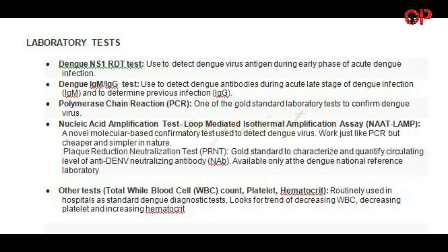The Dengue IgM and IgG test is used to detect dengue antibodies during the acute late stage of dengue infection (IgM), and to determine previous infection (IgG). Polymerase Chain Reaction (PCR) is one of the standard laboratory tests to confirm dengue virus.